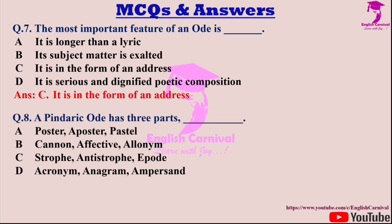Question eight: A Pindaric ode has three parts. Options are A: Poster, Poster, Pastel; B: Canon, Effective, Elonym; C: Strophe, Antistrophe, and Epode; and D: Acronym, Anagram, and Ampersand. The correct answer is C — Strophe, Antistrophe, and Epode.